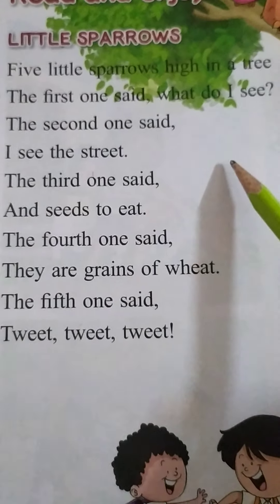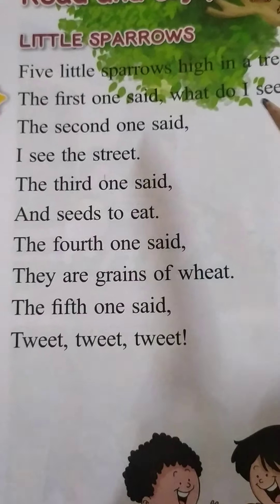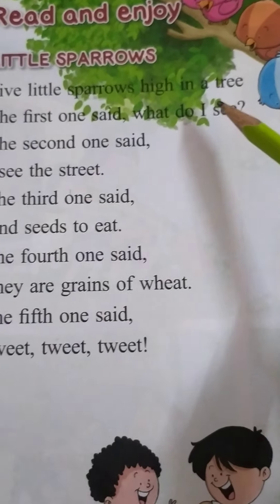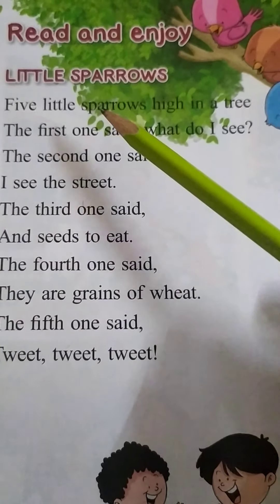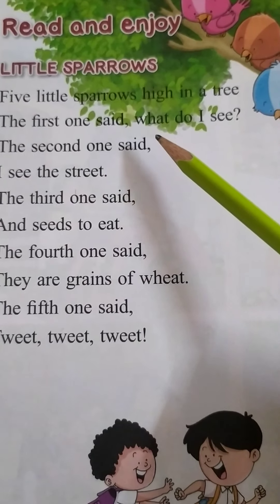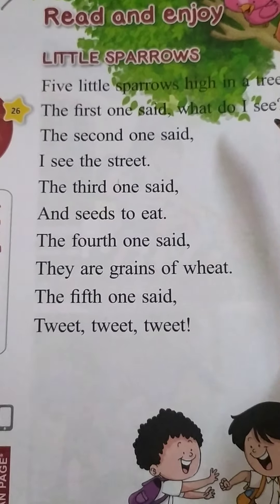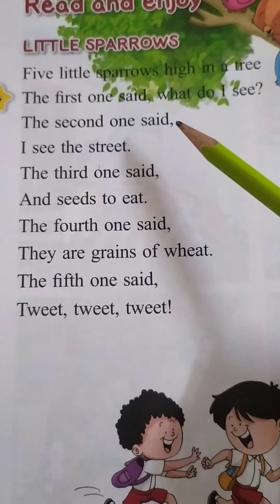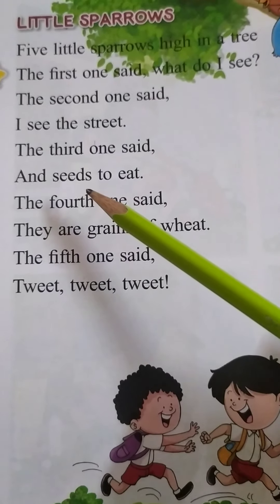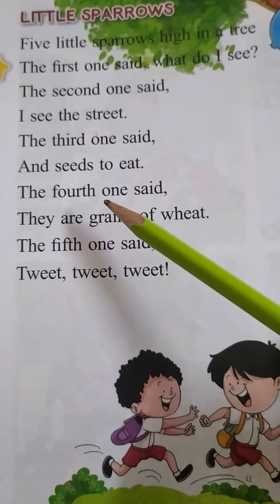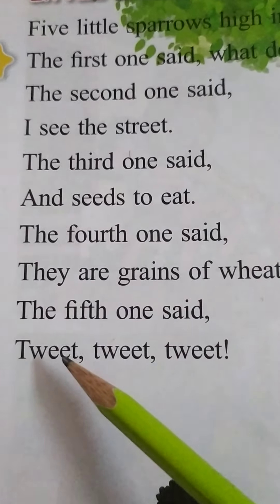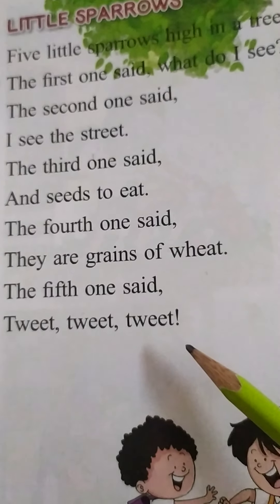See here, children, a rhyme is given. Everyone first listen. Five little sparrows high in a tree. The first one said, what do I see? The second one said, I see the street. The third one said, what — and seeds to eat. The fourth one said, they are grains of wheat. The fifth one said, twit twit twit.